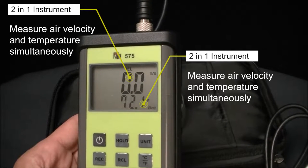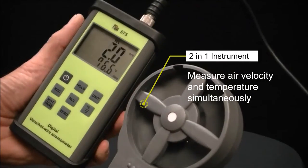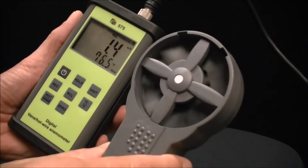The 575C1 combines two instruments in one. This high quality instrument offers the technician the ability to take a variety of measurements by interchanging a vane and hot wire anemometer.